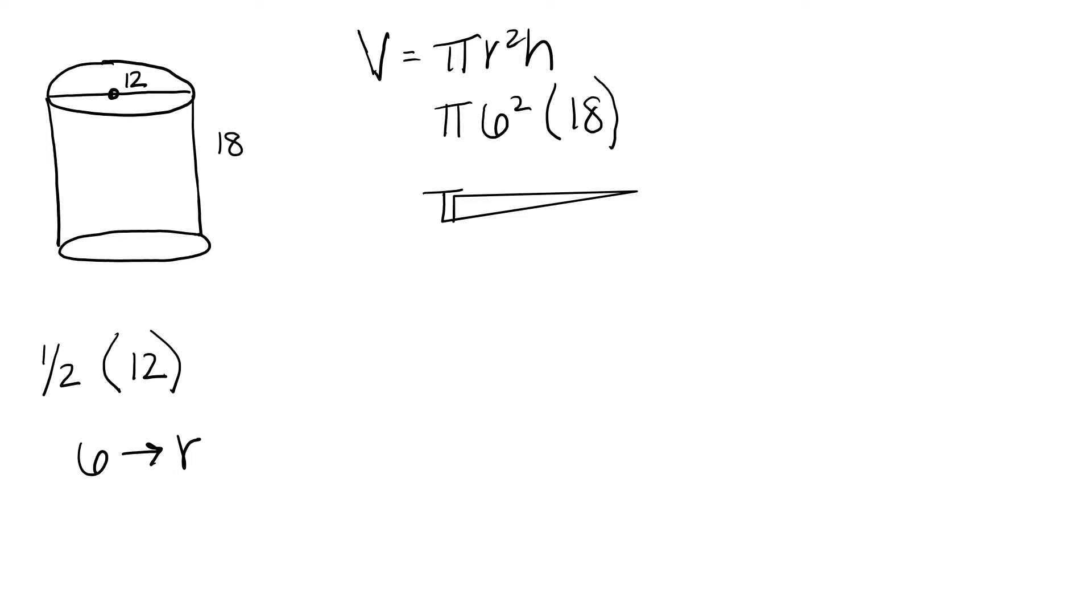Solving the exponents first, 6 squared is going to give us 36. We multiply that times the height, 18, to get 648.